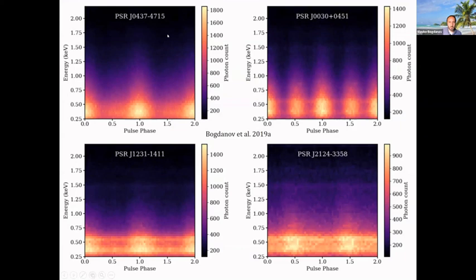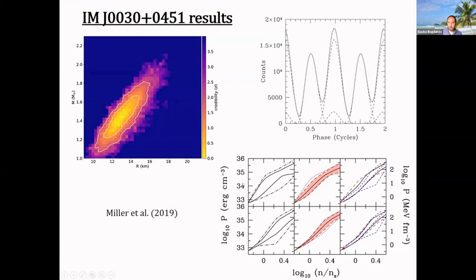This is the first set of results published at the end of 2019, for J0030+0451 — an isolated pulsar with no possibility of an independent mass measurement. We do get some information about the mass, but it's not particularly constraining. This is from the paper led by Cole, showing the mass-radius constraint and the pressure-density constraint. The same object analyzed by Tom Riley and collaborators yields consistent results for the mass and radius. Interestingly, we also get information about the arrangement of surface emission on the star — we're getting peculiar hotspot geometries not consistent with a standard dipole magnetic field, which is interesting for understanding neutron star magnetic fields and evolution.